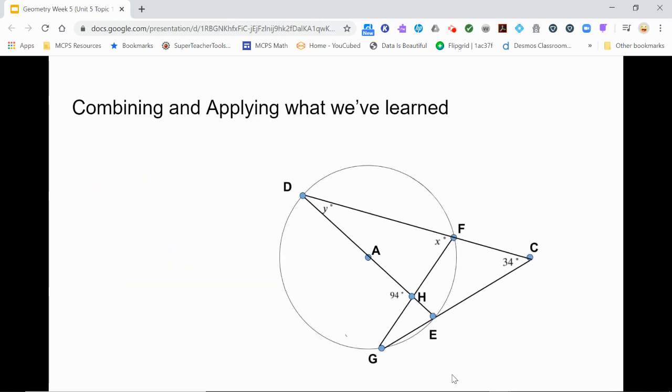What relationships did you see? Did you notice that two chords intersect inside the circle and two secant lines intersect outside the circle? We're going to walk through one way to solve for the missing angles, but it's important to know that that isn't the only way to solve this problem.